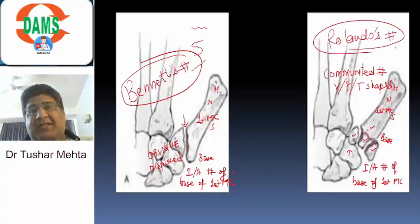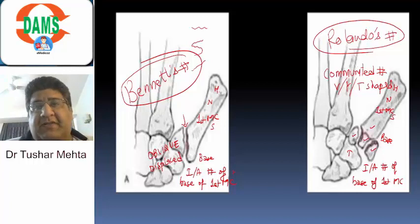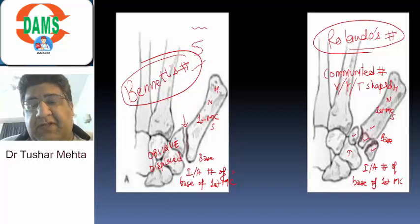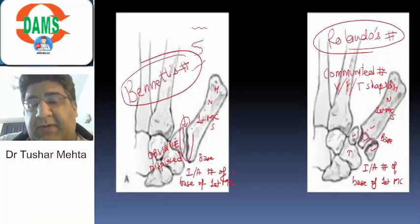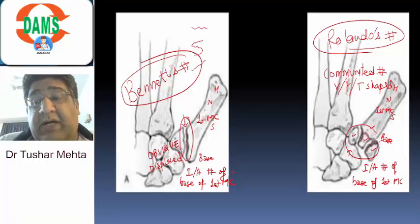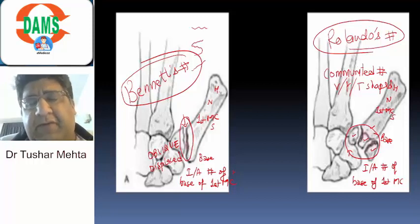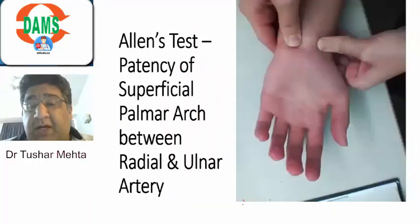So, guys, to conclude: two fractures of the base of the first metacarpal both have one thing in common — both are intra-articular. What is the difference? If it is oblique and displaced, it's Bennett's. If it is T, V, or Y shaped and comminuted, it's Rolando's. This is how we differentiate Bennett and Rolando — a very frequently asked topic, right from your UG to PG.